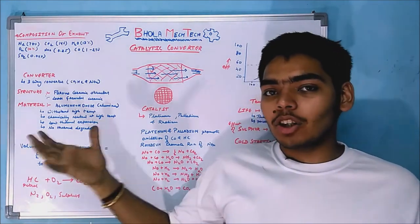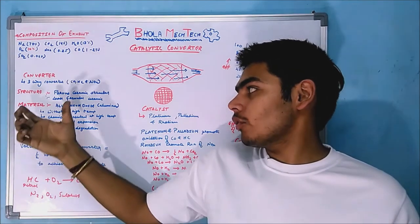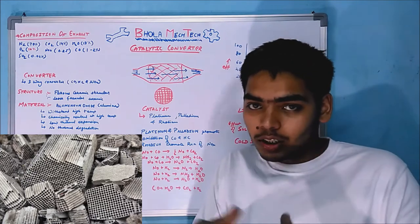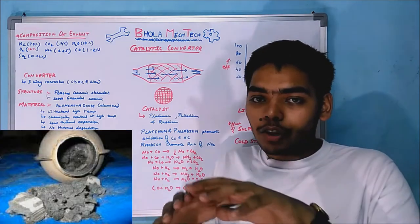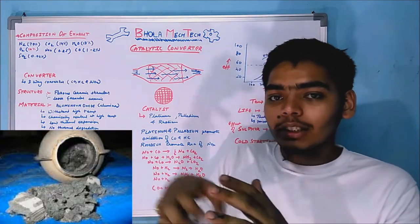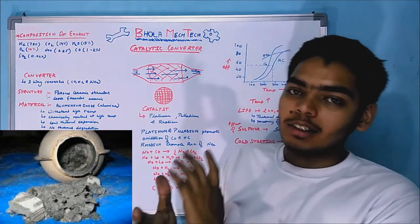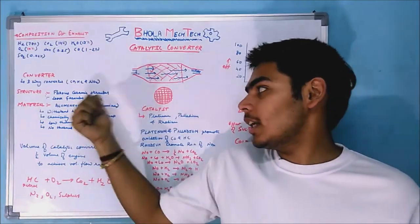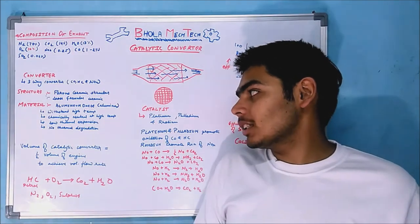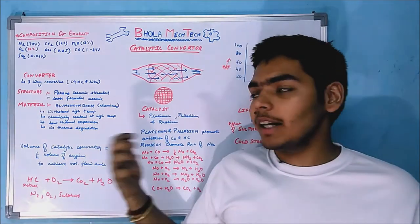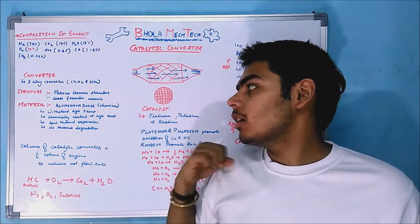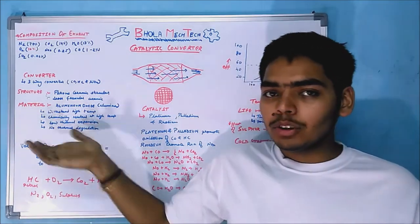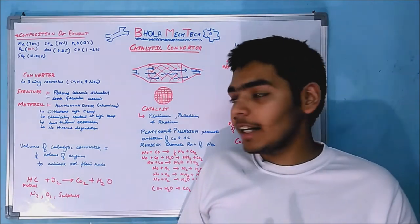Coming to the structure of the catalytic converter, it consists of a porous ceramic structure — essentially a loose granule structure. This loose granule ceramic structure contains a porous cloth in which the granules are filled, and the exhaust gases are passed through them. The material of this porous ceramic structure is aluminium oxide, also known as alumina.